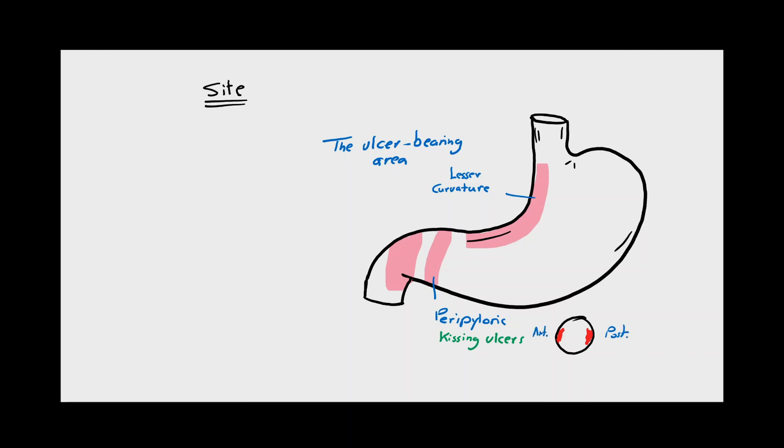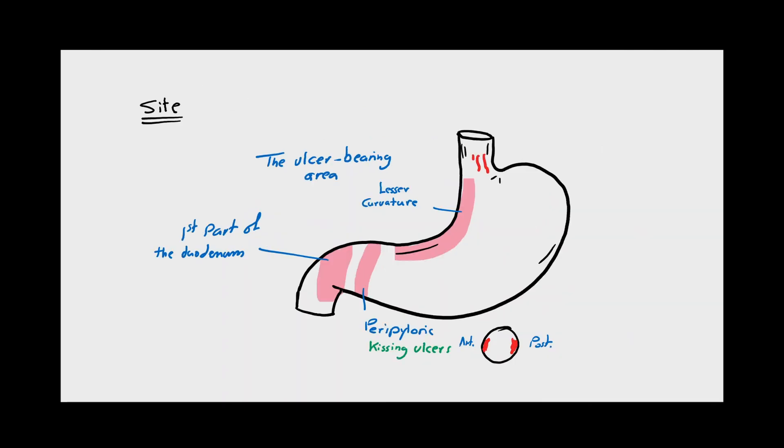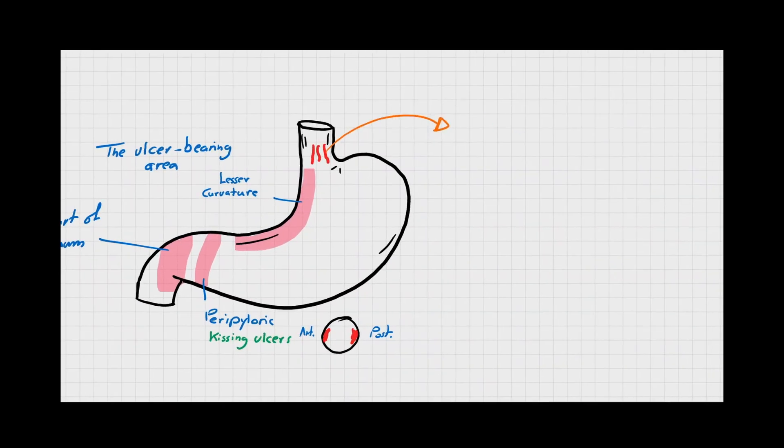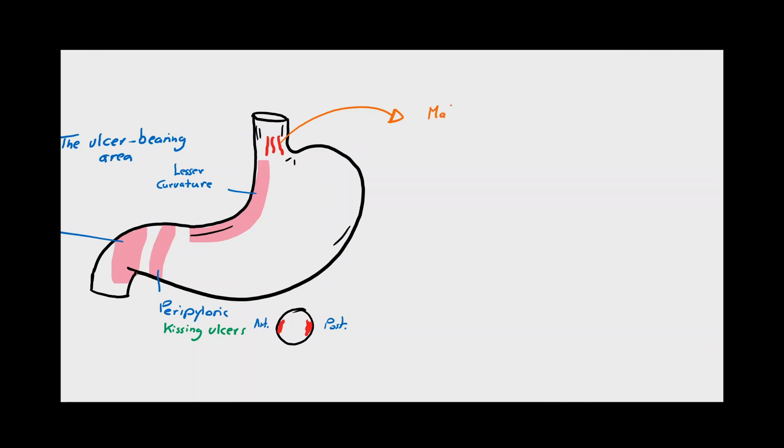Another common site is the first part of the duodenum, which is known for its massive complications like bleeding and perforation. Here I would like to add a side note about the Mallory-Weiss syndrome, which is an upper gastrointestinal bleeding following massive vomiting due to superficial mucosal tears in the gastroesophageal junction. It is usually uncomplicated and self-limiting.